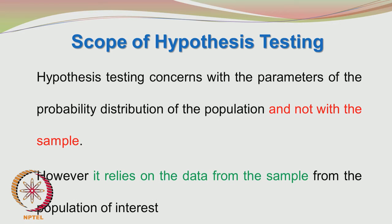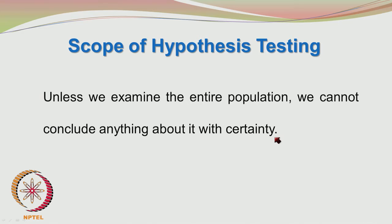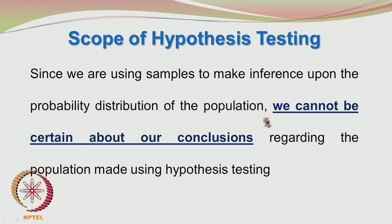Hypothesis testing concerns the parameters of the probability distribution of the population, not of the sample. However, it relies on data from the sample. Always remember that hypothesis testing is subject to some uncertainty. Unless we examine the entire population, we cannot conclude anything about the population distribution with 100% accuracy or certainty.